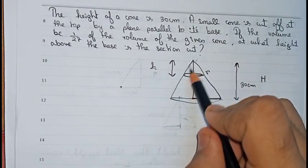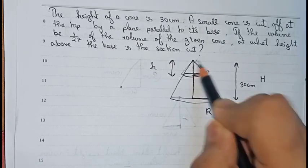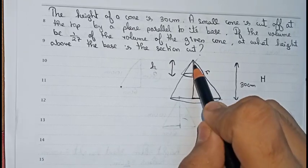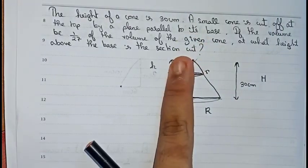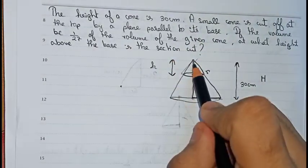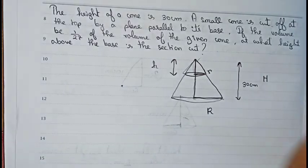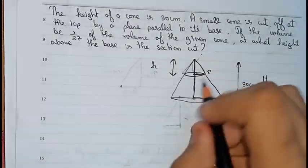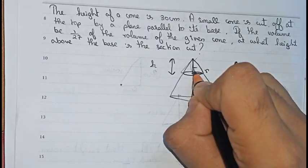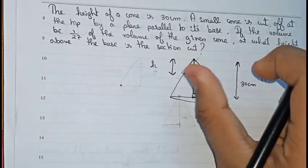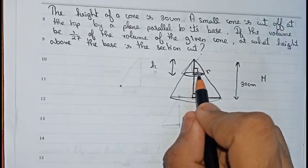First we need to prove that the small triangle is similar to the big triangle — only this side, this triangle is similar to this triangle. We can see that both are right-angle triangles, so this angle and this angle are both 90 degrees. The first criterion is satisfied.